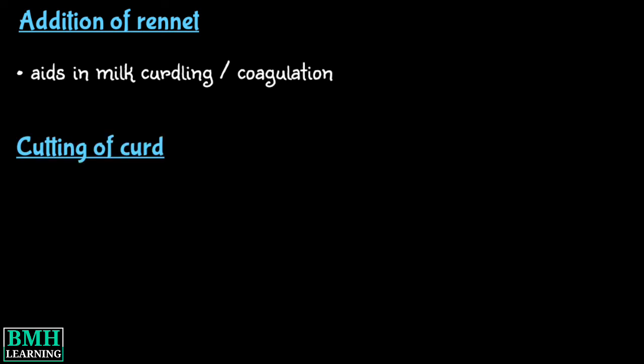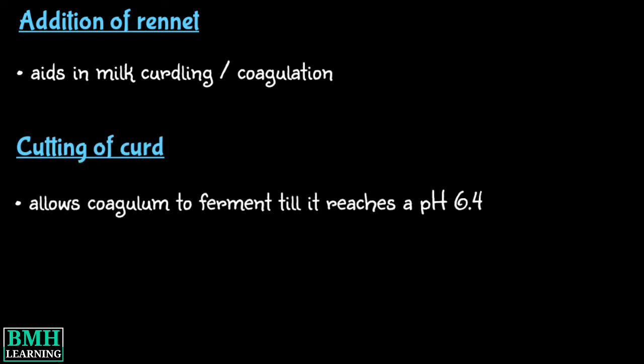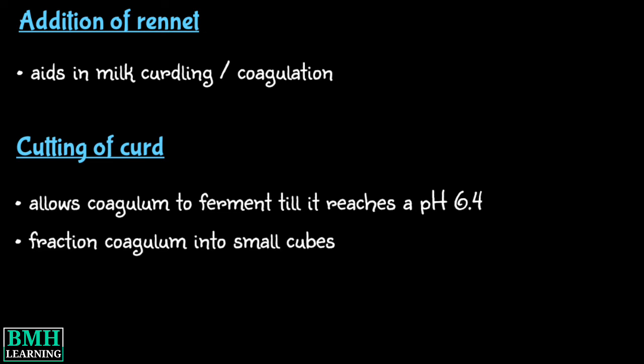Cutting of curd: This step allows the coagulum to ferment until it reaches a pH of 6.4. Then fraction the coagulum into small cubes with a cheese cutter. This step allows easy separation of whey out of the curd.